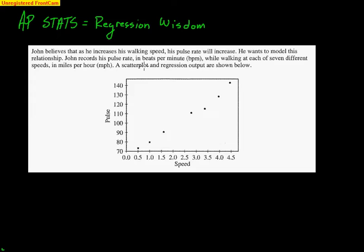First thing here, let's read this problem. John believes that as he increases his walking speed, his pulse rate will increase. Certainly sounds understandable. He wants to model this relationship. John records his pulse rate in beats per minute while walking at each of seven different speeds in miles per hour. A scatterplot and regression output are shown below. Obviously the X is speed and that is the explanatory variable. The Y is pulse rate and that is the response variable. We notice this data looks fairly straight.